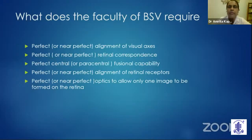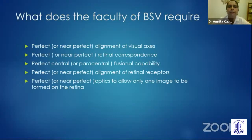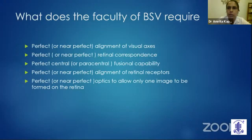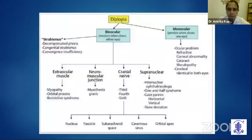It is quite amazing to have different retinal images produce one single vision. This requires a lot of things to come together: perfect alignment of visual axes, perfect retinal correspondence, perfect central fusional capability, perfect alignment of retinal receptors, and perfect or near-perfect optics to allow only one image to be formed on the retina. When any one of these goes astray, we start seeing patients of diplopia.